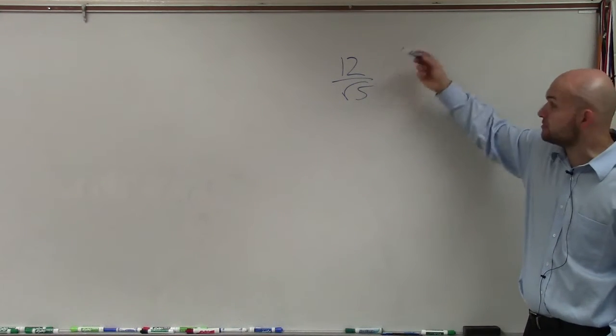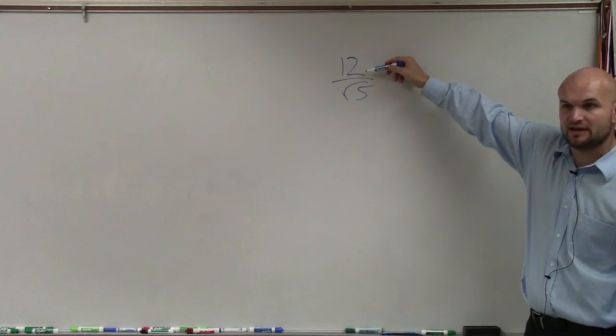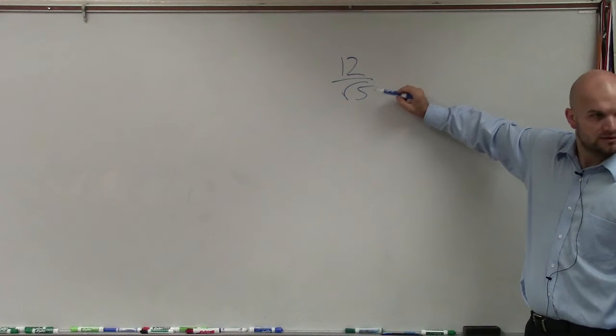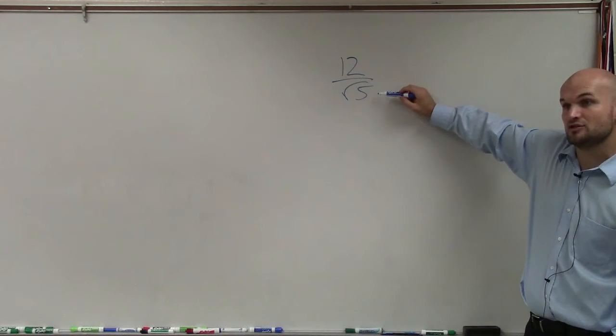So I'm dividing a number by a square root. The square root of 5 does not evenly divide into this 12, because the square root of 5 is an irrational number. Remember, we talked about that. The square root of 5, you cannot evenly take the square root, so that's an irrational number.